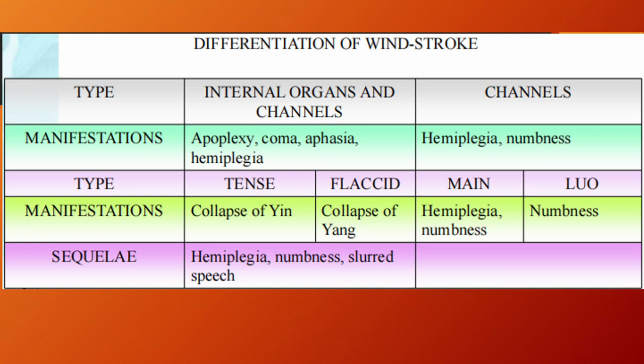Here is a table showing the differentiation of windstroke. For the severe type, we have apoplexy, coma, aphasia, and hemiplegia. It is divided into two types: tense and flaccid. For the mild type, which involves only the channels, we have hemiplegia and numbness as manifestations, which is further subdivided into the main channels and the luo connecting channels that are affected.